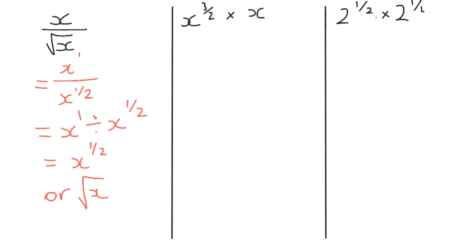Our second one here I've got x to the 3 over 2 multiply x to the 1. Well I'm just going to add my powers here. So I've got x to the power of 3 over 2 plus 1, which is x to the power of 5 over 2.